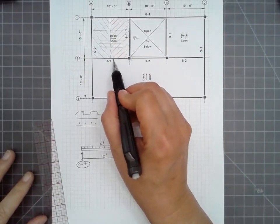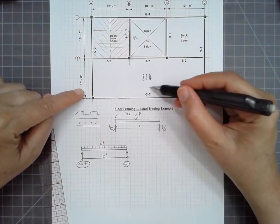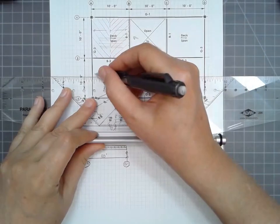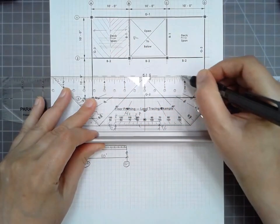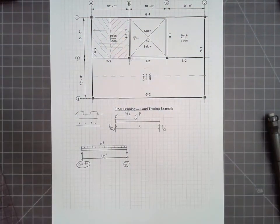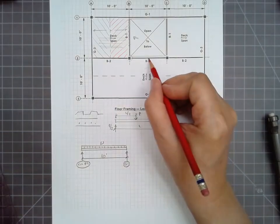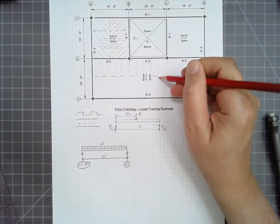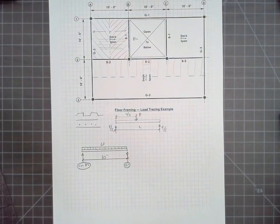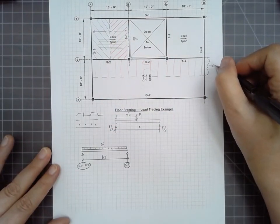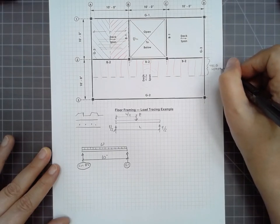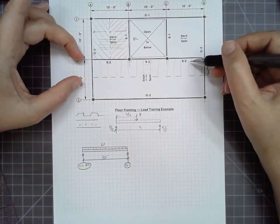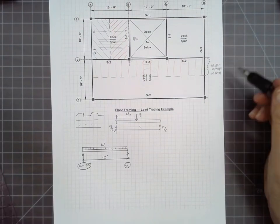Now we have an element here that's B2. The deck span here has changed direction. So our tributary width, in this case, is actually split down the middle this way. So all of these elements that are labeled B2 are all carrying a little bit of a distributed load. So this we refer to as a tributary width.